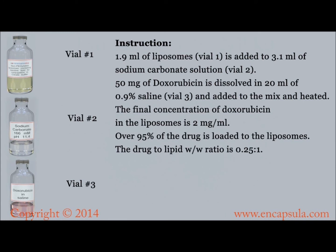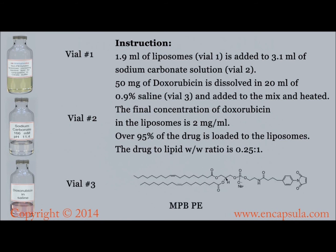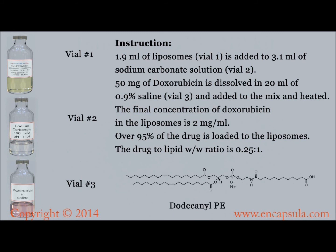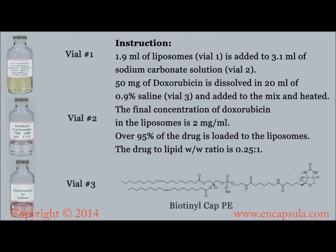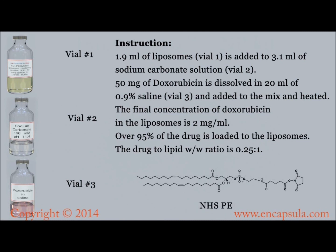Each non-pegylated immunodox mixture contains 2 milligrams of encapsulated doxorubicin per milliliter. Non-pegylated immunodox kits contain reactive moieties such as succinyl PE, glutaryl PE, PE-MCC, MPB PE, PDP PE, dodecanoyl PE, dodecanoyl amine PE, biotinyl PE, biotinyl CAP PE, caproyl amine PE, or NHS PE.